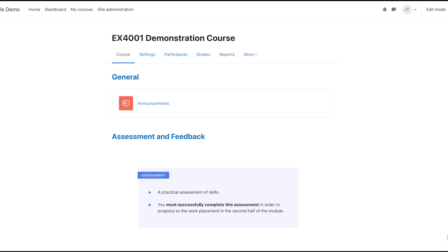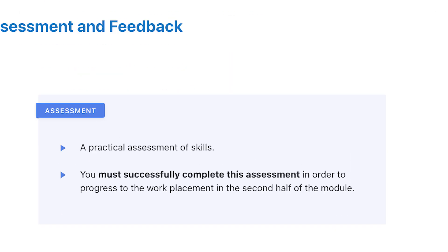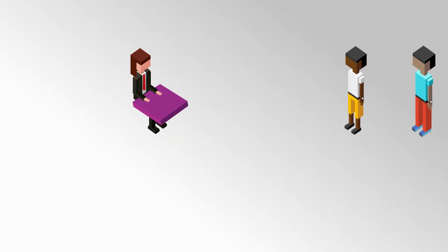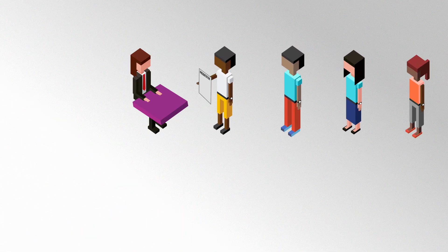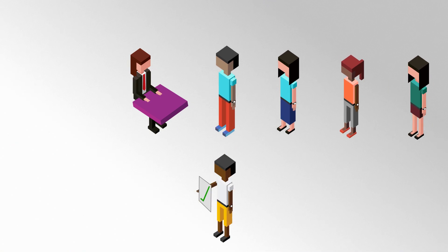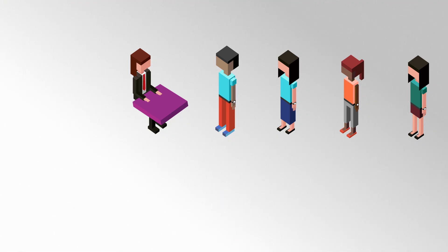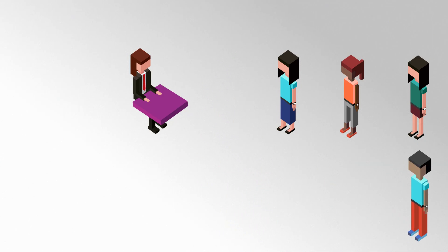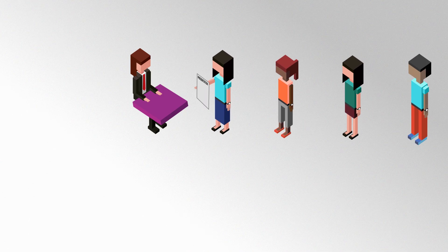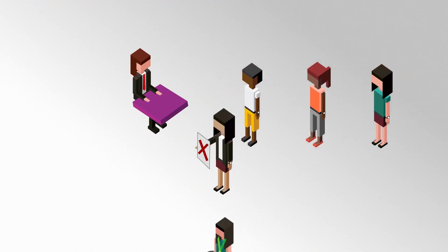This module has an assessment that takes the form of a practical assessment. Completing this assessment is an essential requirement for subsequent parts of the course. Students arrive and complete the assessment in front of an assessor. If they pass, they're awarded a certificate or confirmation that the student can take to show at a placement or submit to an assignment. If a student fails, they'll need to go back and work on things so they can present again. This cycle continues until all students have successfully completed the assessment.